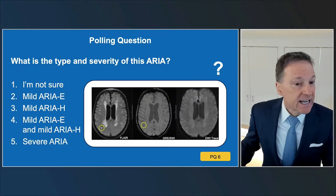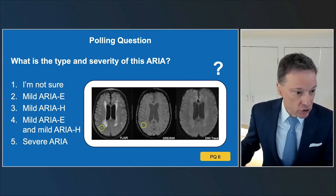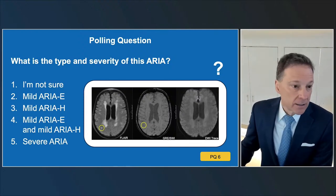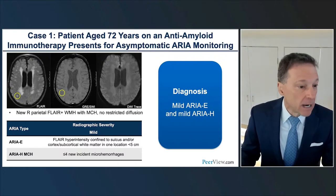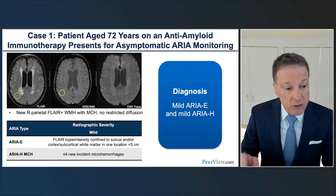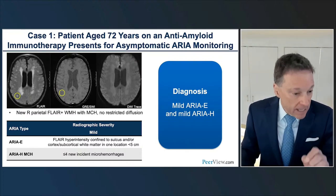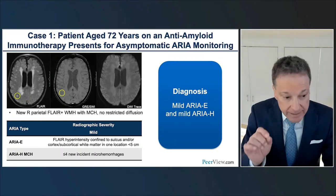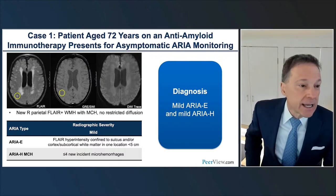Polling question number two: what is the type and severity of this finding if we believe it's ARIA? (1) Not sure, (2) Mild ARIA-E, (3) Mild ARIA-H, (4) Both mild ARIA-E and mild ARIA-H, (5) Severe ARIA. These findings are absolutely consistent with ARIA-E and ARIA-H — specifically mild ARIA-E and mild ARIA-H. Remember, ARIA does not demonstrate associated restricted diffusion, and does not show associated contrast enhancement. A very small brain met can rarely show up similarly on susceptibility imaging without contrast enhancement, but this is an example of mild ARIA-E and mild ARIA-H.